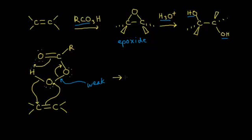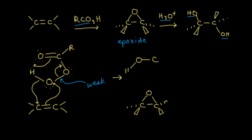Let's draw the results of this concerted eight-electron mechanism. At the bottom, we form our epoxide — we draw in our carbons and put in our oxygen with the bond between them. At the top, here's my carbonyl carbon. There's now only one bond between that carbon and this oxygen, and a new bond formed between that oxygen and that hydrogen. Another lone pair of electrons moved in to form a carbonyl. So this other product is a carboxylic acid.